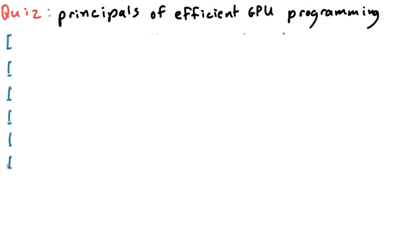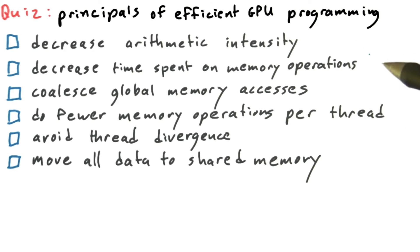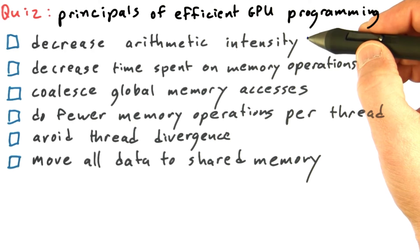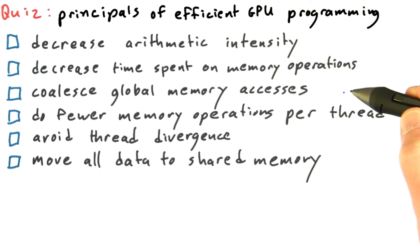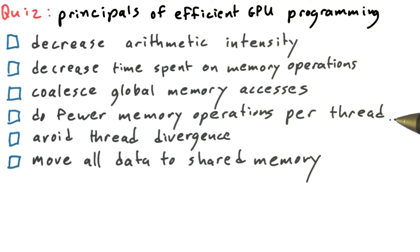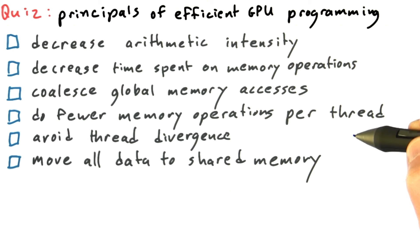Cast your mind back to Unit 2, where we talked a little bit about some basic principles of efficient GPU programming. Check which of these principles accurately correspond to things we talked about in Unit 2: Do we want to decrease arithmetic intensity? Do we want to decrease the time spent on memory operations per thread? Do we want to coalesce global memory accesses? Do we want to do fewer memory operations per thread? Do we want to avoid thread divergence? Do we want to move all data to shared memory?